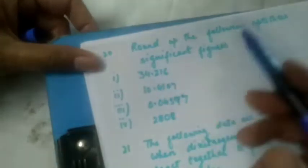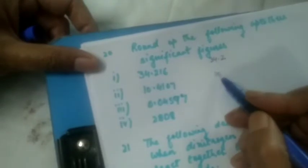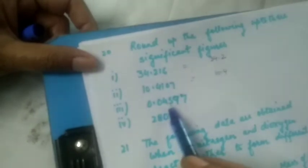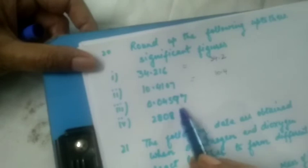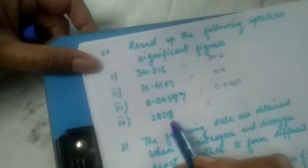Round up the following to three significant figures. For 34.25 — the digit after the third significant figure is less than 5, so it becomes 34.2. For 10.45 — the next digit is less than 5, so it becomes 10.4. For 0.04596 — significant figures start from the first non-zero digit 4, 5, 9; the next digit is greater than 5, so 59 rounds up to 60, giving 0.0460.